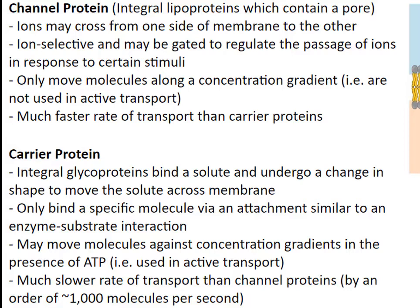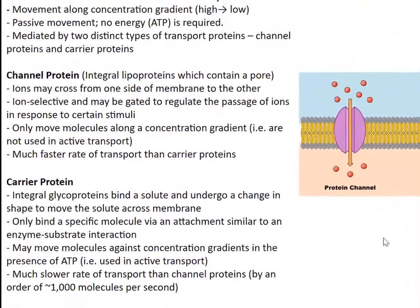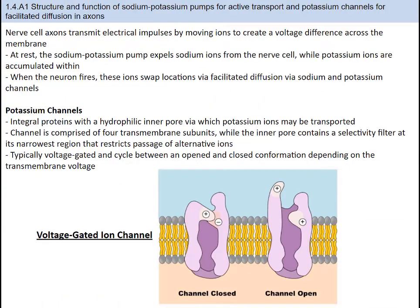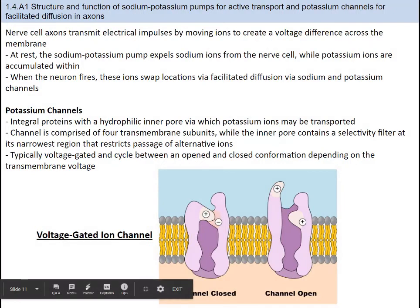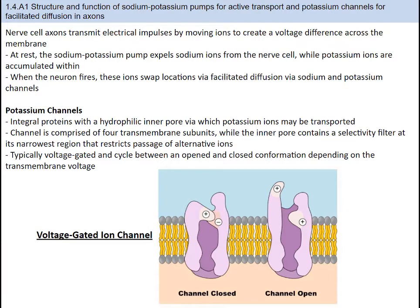Channel proteins might be ion-selective, where they react to a specific stimulus and only allow certain ions like potassium, sodium, or chloride to pass. The voltage-gated ion channels are an example of passive transport channel proteins. When an action potential is reached, the voltage-gated channels open and sodium floods the axon. Additionally, potassium-gated channels open and potassium moves. These channel proteins are triggered and enable ions to flow very fast from areas of high concentration to areas of low concentration. Technically, as the potassium channels require some assistance via a trigger, this passive transport is called facilitated diffusion.